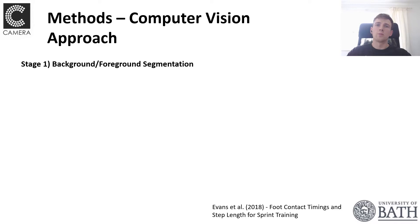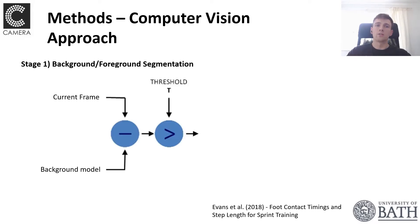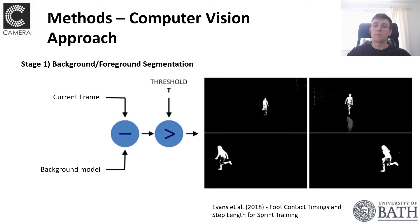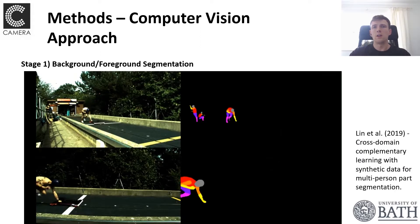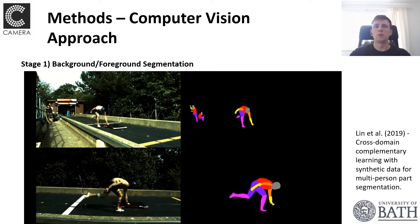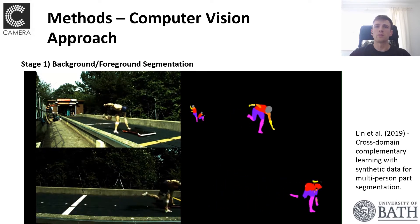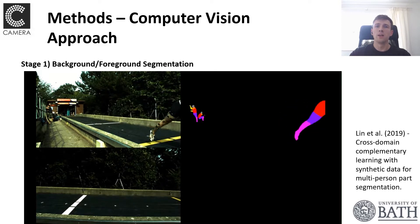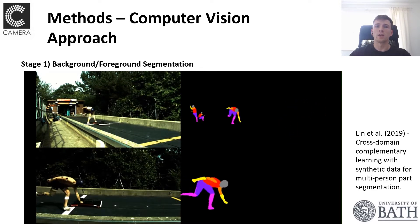The methods presented here build upon previous work from within our research group, which looked to capture foot timing information during running and sprinting. The first step is to segment the foreground and background using a traditional background segmentation method, which takes a background model and thresholds it against the current frame. However, this method didn't work particularly well in dynamic lighting conditions and with a dynamic background scene at the skeleton push track. Instead, we utilized a convolutional neural network based human parts segmentation method that robustly segments the athlete with a high resolution mask, with the added advantage of being able to segment body parts too.